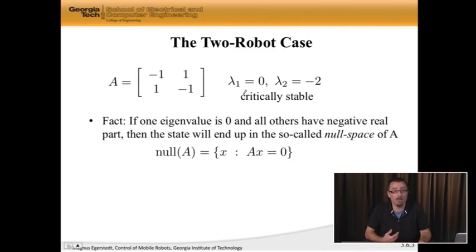And in fact, here is a fact that I'm not going to show, but this is a very useful fact, so that if you have one eigenvalue be zero and all the others have negative real part, then in a certain sense you're acting like asymptotic stability, meaning you go, in this case not to zero, but you go into a special space called the null space of A. And the null space of A is given by the set of all x, such that when you multiply A by x, you get zero out.